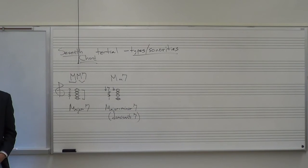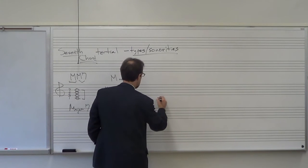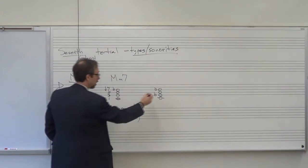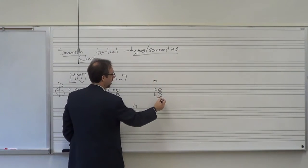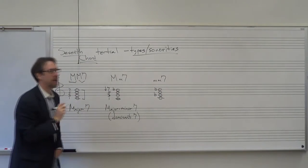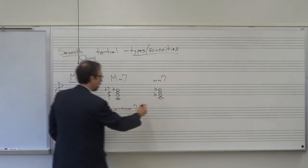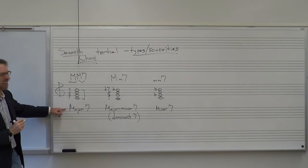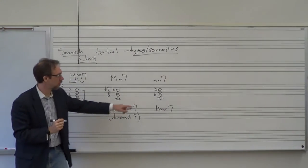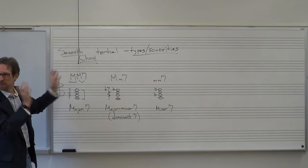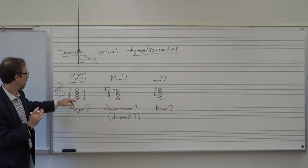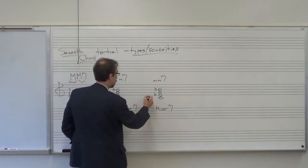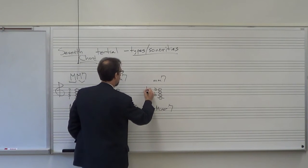We have more seventh chords. If we take C, E-flat, G, and B-flat — what type of triad? C, E-flat, G is a minor triad. C to B-flat is a minor seventh. So we say a minor minor seventh, but instead of repeating that word, we would just say a minor seven chord. The formula here is 1, lowered third, fifth, lowered seventh.